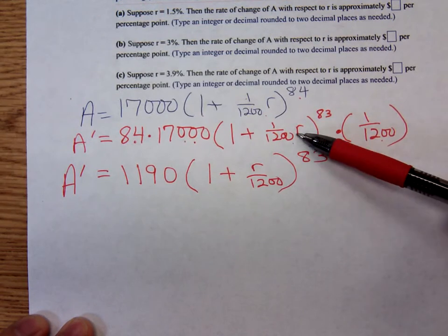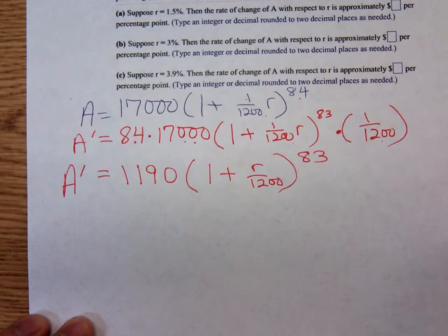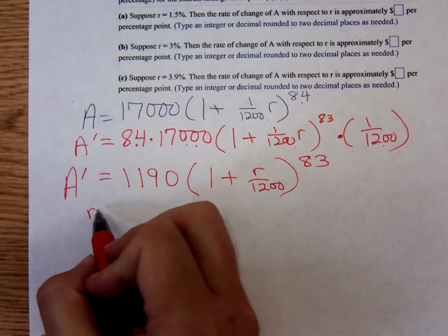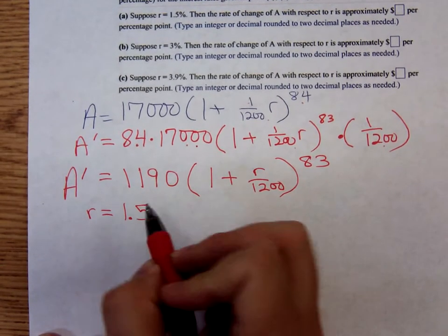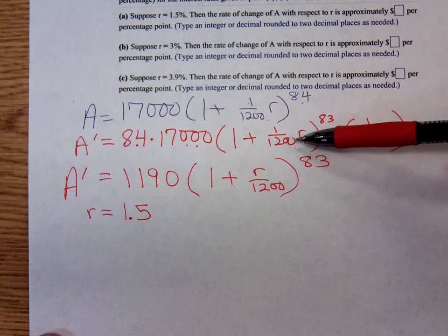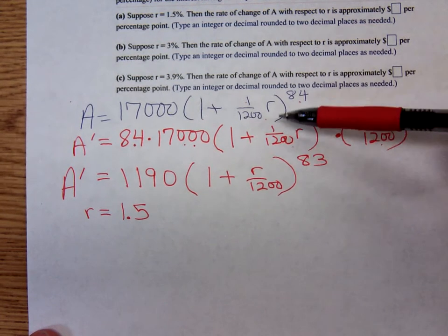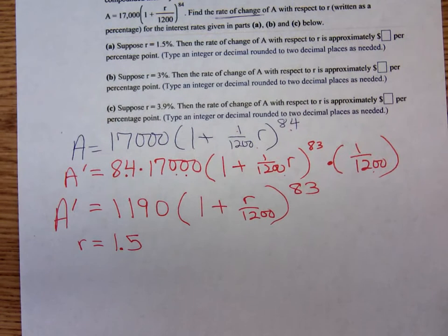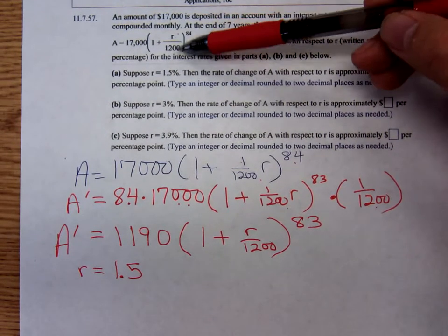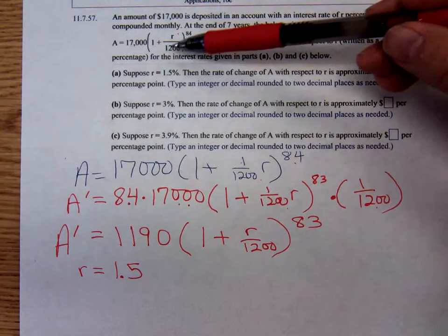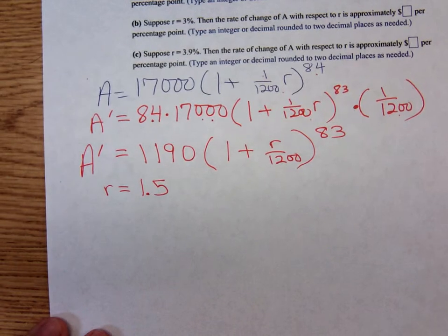I went ahead and converted the one twelve hundred r back to just r over twelve hundred. Now for part a they want us to find how rapidly that account balance is changing when the interest rate is one point five percent. So r equals one point five. Notice we don't have to convert the interest rate - resist that urge to write it as point zero one five. They've multiplied above and below by a hundred, so you don't have to worry about converting that one point five percent. Just plug in one point five for r.